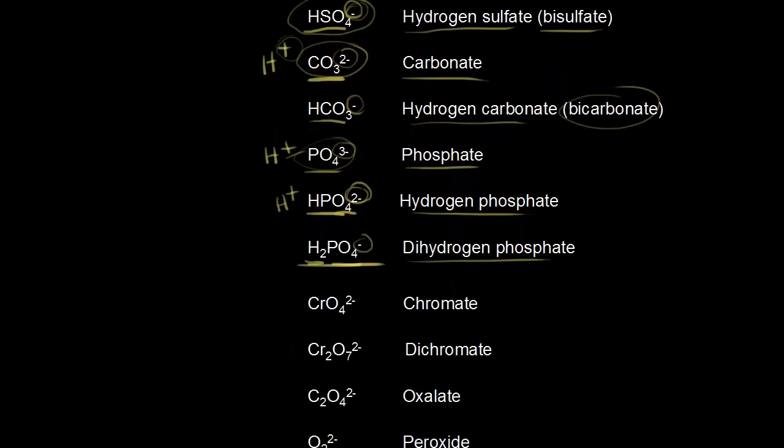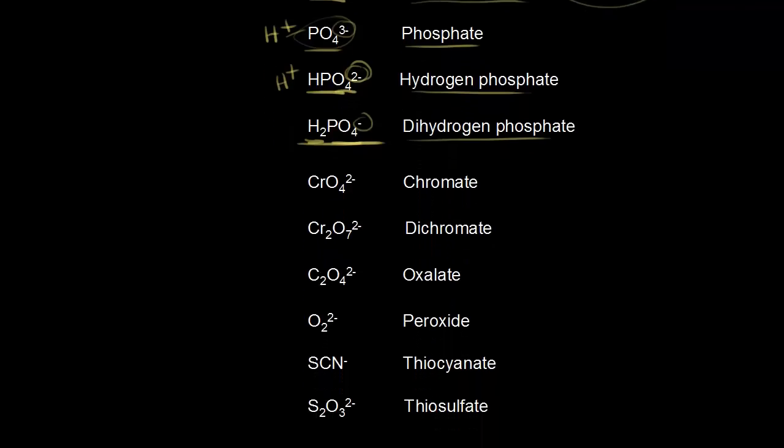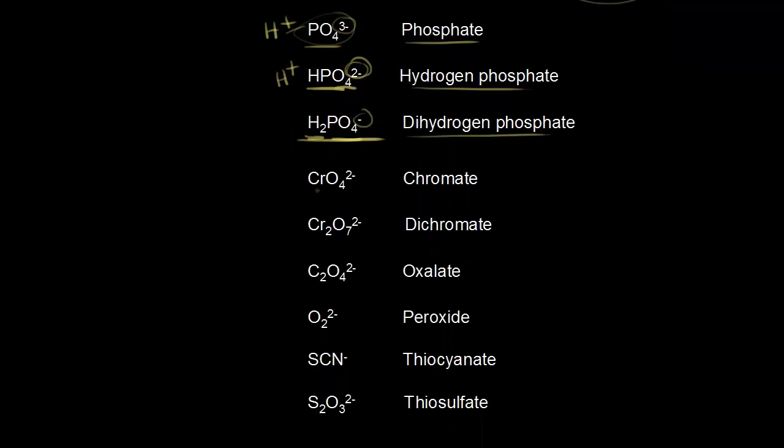Let's continue on. One more set of polyatomic ions to know. So we have CrO4 2 minus, which is called chromate, and if we have two chromiums, so Cr2O7 2 minus, this is called dichromate.